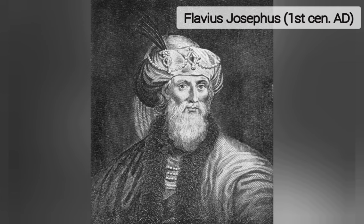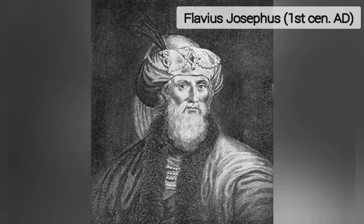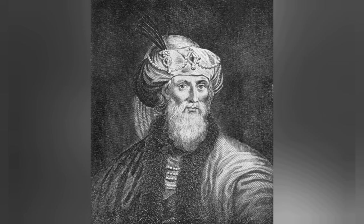Flavius Josephus was a leader in the Jewish rebellion against Rome, AD 66–73, but surrendered and became a historian. His books are some of the most quoted sources outside the Bible concerning ancient Israel and the Jews in the 1st century AD. Josephus writes that the Assyrians deported all the Israelites of the northern kingdom of the 10 tribes out of the land of Israel and settled them in Media and Persia.